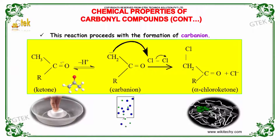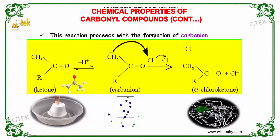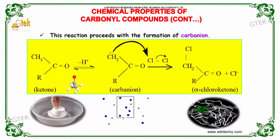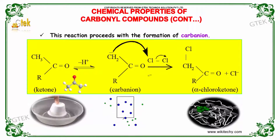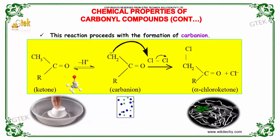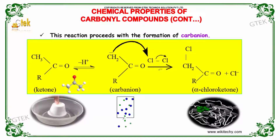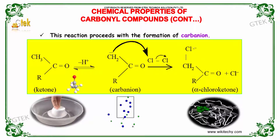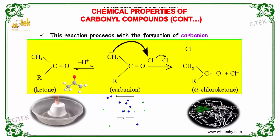This reaction proceeds with the formation of a carbanion intermediate. When the ketone forms a carbanion as an intermediate, it then reacts with Cl₂ to produce the alpha-chloro ketone, as shown here.